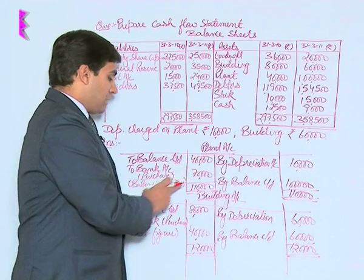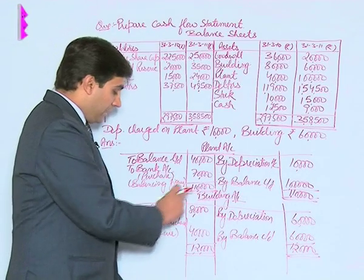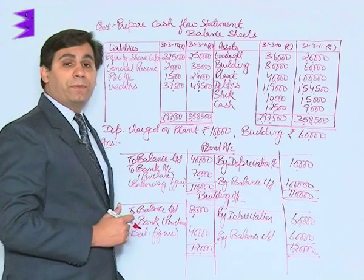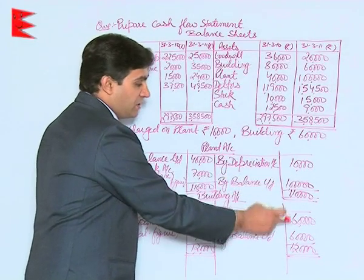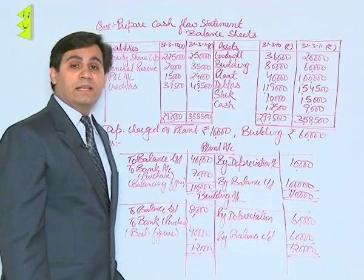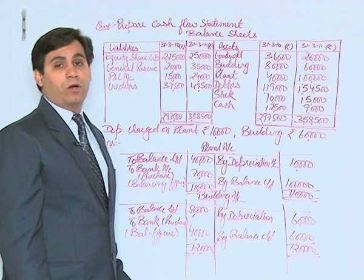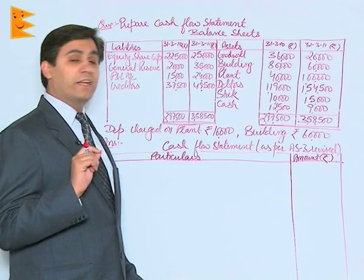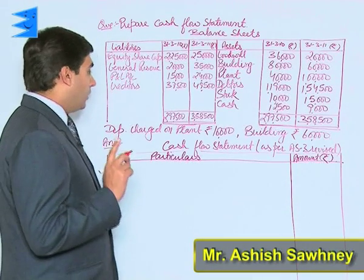Now, plant account shows an outflow of 70,000 on account of purchase of new plant, and the building account shows an outflow of 40,000 on account of purchase of new building. Both will appear in investing activities. The depreciation of 10,000 from plant account and 60,000 from building account would be taken as non-operating, non-cash items while calculating cash flow from operating activities.